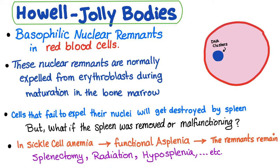Other causes include radiation — radiation directed toward the spleen, especially in cases of lymphoma — or hyposplenia, where the function of the spleen is reduced. In all these situations, you end up with Howell-Jolly bodies.